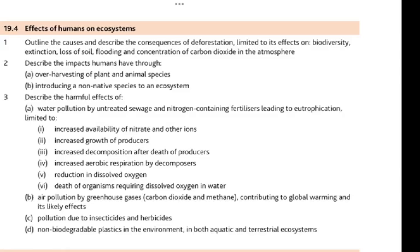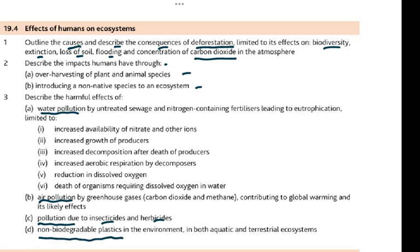In 19.4, the effects of humans on ecosystems, we outline the causes and describe the consequences of deforestation, limited to the effects on biodiversity, extinction, loss of soil, flooding, and concentration of carbon dioxide in the atmosphere. We describe the impacts humans have through over-harvesting of plants and animal species, introducing non-native species to an ecosystem — invasive alien species — then the effects of water pollution, air pollution, pollution due to insecticides and herbicides, and non-biodegradable plastics in both aquatic and terrestrial environments.